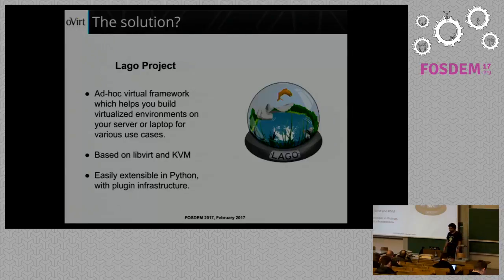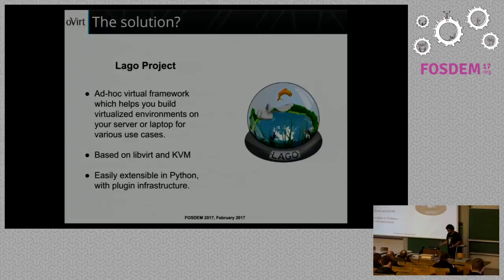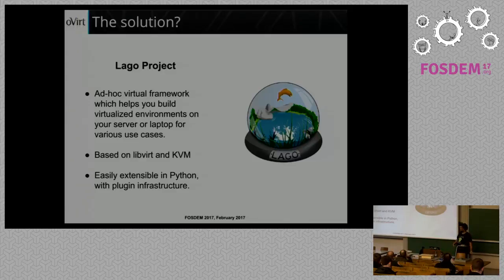This is what oVirt engine looks like - a screenshot from one of our internal Red Hat instances we use for testing. It's not the biggest deployment we know, but it's a quite large deployment with three data centers. This is the main dashboard; we have options and screens to change about everything on the machines. The solution we found to make testing and deployment easier is the LAGO project. It is basically a network framework for virtualization that can build environments using LibVirt and KVM, and almost all layers of LAGO are extensible by plugins in Python.